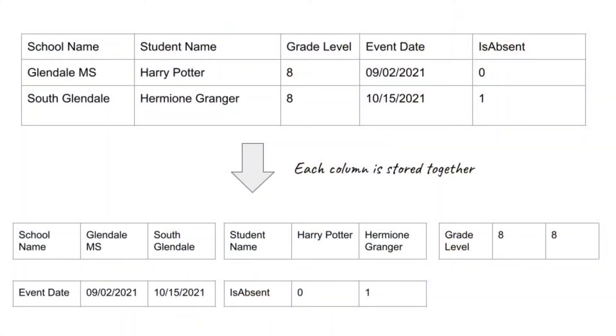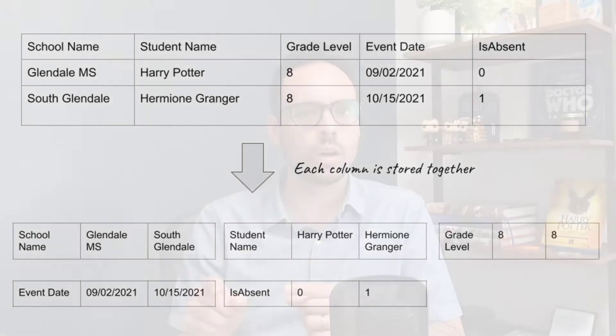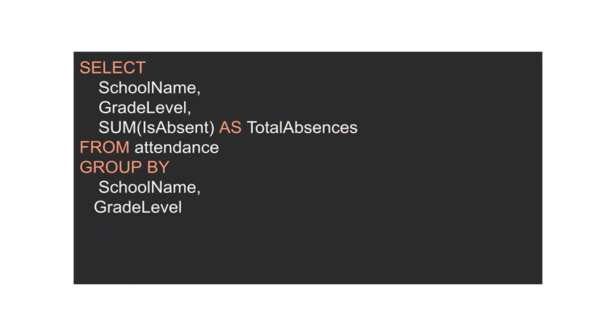Column store databases like Google BigQuery store each column together on disk, and that's what we want in our analytics store because the type of SQL queries being run in BigQuery are different. Imagine in BigQuery you're writing a SQL statement selecting every school and every grade level, then running a sum on an absence column to get total absences per grade level per school and comparing campus to campus.